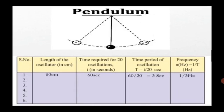Record your observations in the following table: deduce the time period of oscillation and frequency of the pendulum by making use of the given formula. Length of the oscillator in centimeters will take 60 centimeters, and time required for 20 oscillations in seconds, so we'll take 60 seconds.